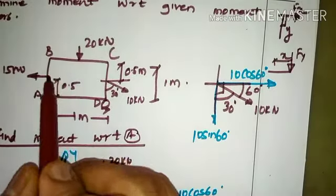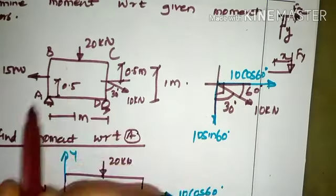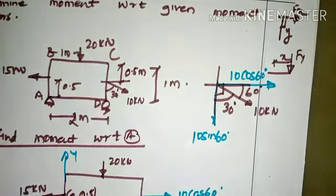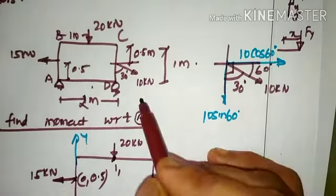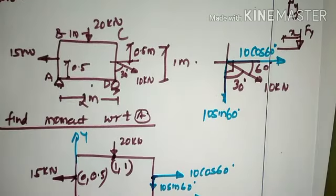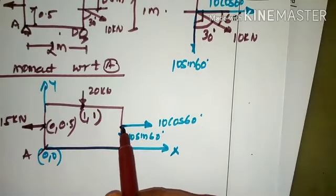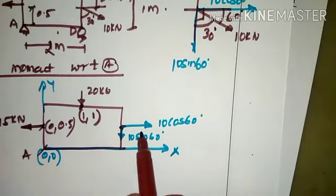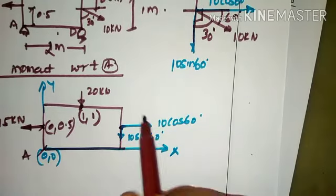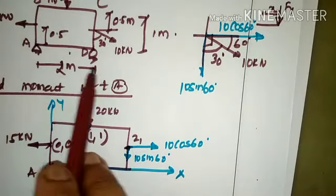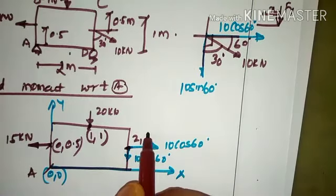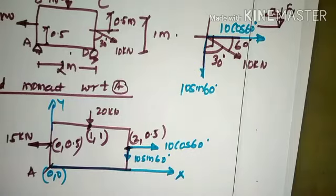For the 20 kN force placed at the top, the coordinate is x = 1 m from the origin and y = 1, so the coordinate is (1, 1). For the 10 kN resolved force at the far end, the x-coordinate is 2 meters since the total base is 2 meters, and y = 0.5 since the force is at the same height.